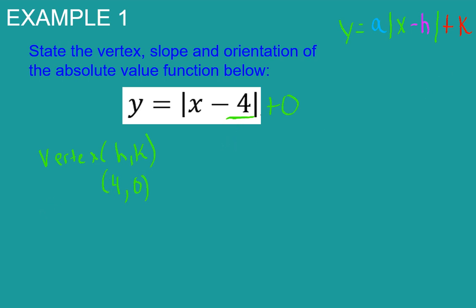The slope is the number that's outside of this being multiplied, and we can see that that's a one. The absence of a number means the slope is one in this example.